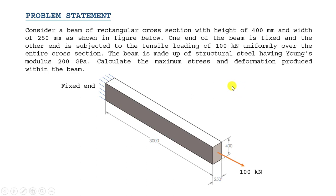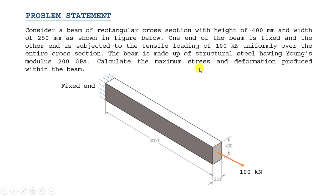The problem statement is as follows. We have a beam of rectangular cross-section. The height of the cross-section is 400 mm and width is 250 mm. The original length of the beam is 3000 mm. One end of the beam is fixed and the other end is subjected to tensile loading of 100 kN. The beam is made up of structural steel and the Young's modulus of steel is 200 GPa. We have to find the maximum stress and deformation produced inside the beam.